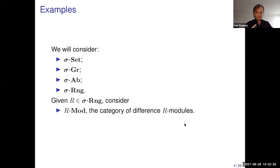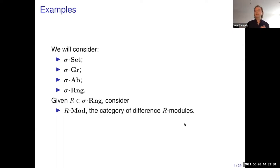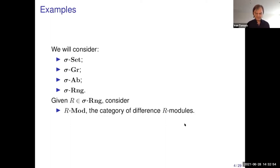Typical examples we'll use quite a lot in this talk are difference sets, which are pairs of a set together with a self-map; a difference group, which is a group with a group homomorphism; and so on — difference rings. For a fixed difference ring, we can also consider the category of difference R-modules.